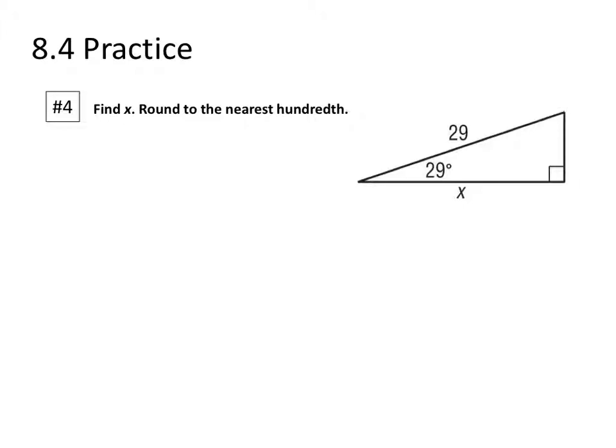The first one is number four and it's asking to find a missing side length in a right triangle, round to the nearest hundredth. So on number four we get a 29 degree acute angle, the hypotenuse is 29 also, and we're looking for the adjacent side.